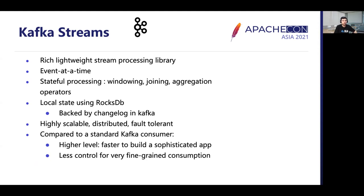Compared to a standard consumer, Kafka Streams provides higher-level abstraction constructs for faster application development, though it also provides less control for very fine-grained consumption. If you need that finer level of control, you can also use the low-level consumer API and write your own custom application. However, that takes more time, so Kafka Streams is really beneficial if you want to do fast development for your event processing applications.